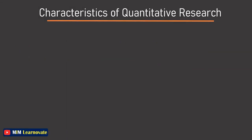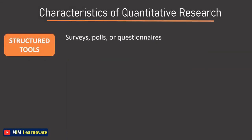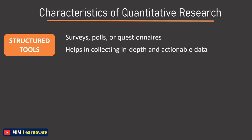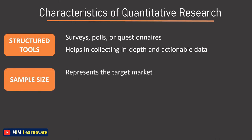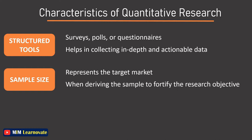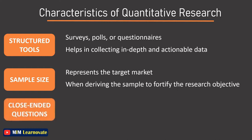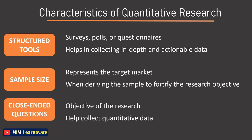Characteristics of quantitative research. Structured tools such as surveys, polls, or questionnaires are used to gather quantitative data, helping collect in-depth and actionable data from respondents. Quantitative research is conducted on a significant sample size that represents the target market, and appropriate sampling methods must be used. Closed-ended questions are created as per the objective of the research and are extensively used in quantitative research.